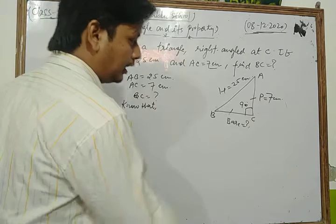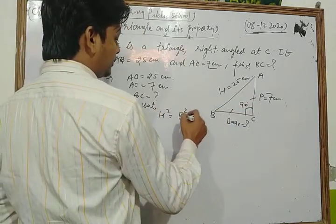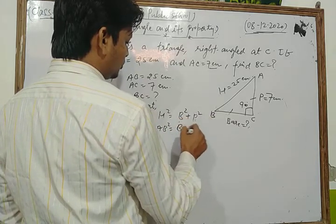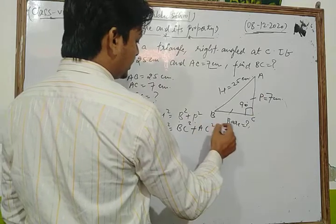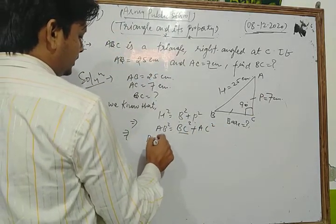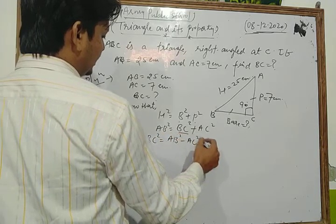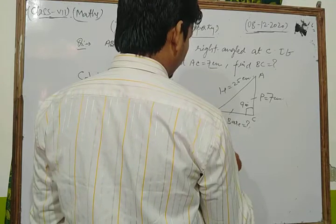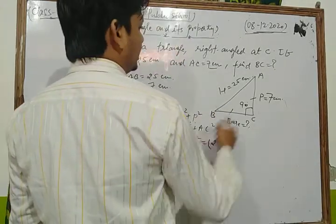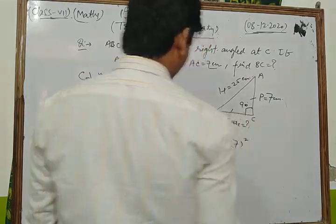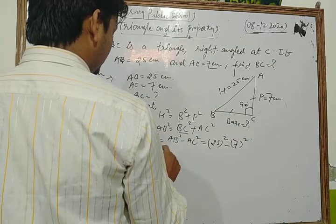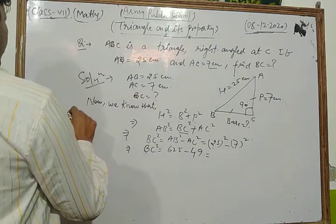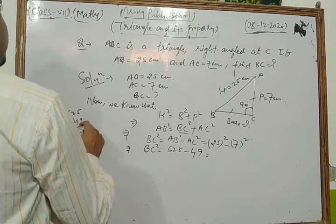Using the Pythagoras property: hypotenuse² equals base² plus perpendicular². So AB² equals BC² plus AC². Therefore BC² equals AB² minus AC², which gives us 25² minus 7², that is 625 minus 49.